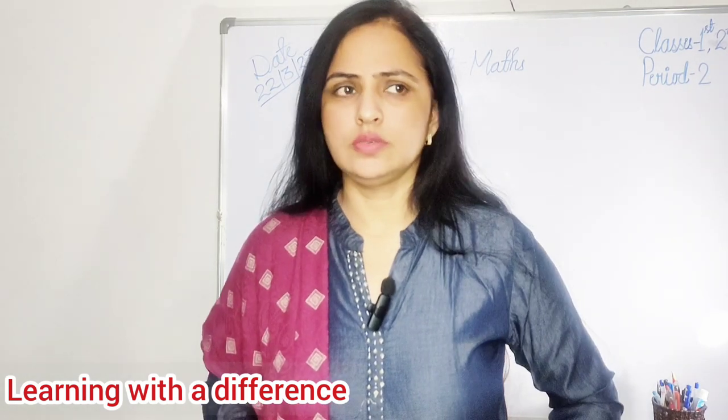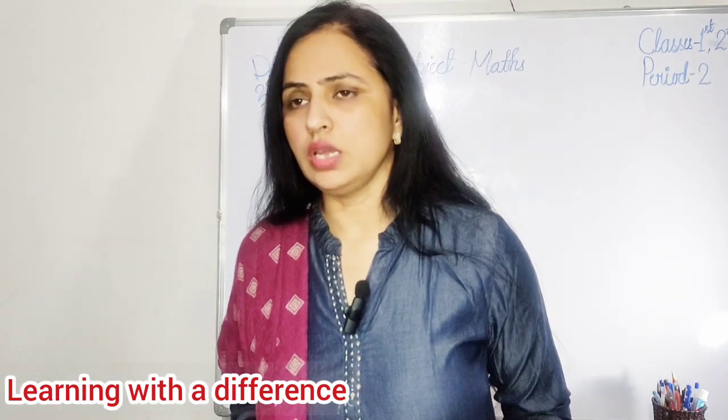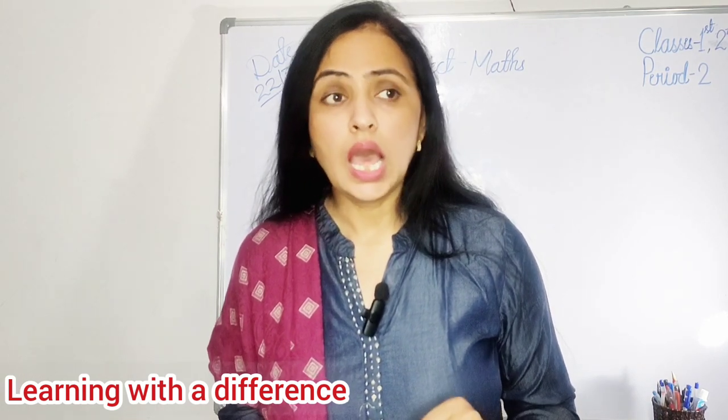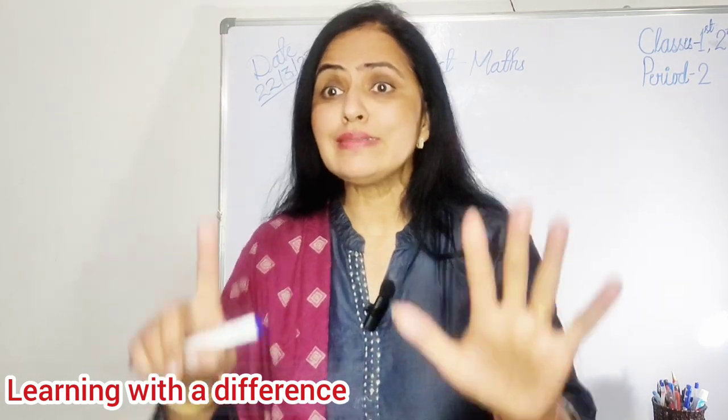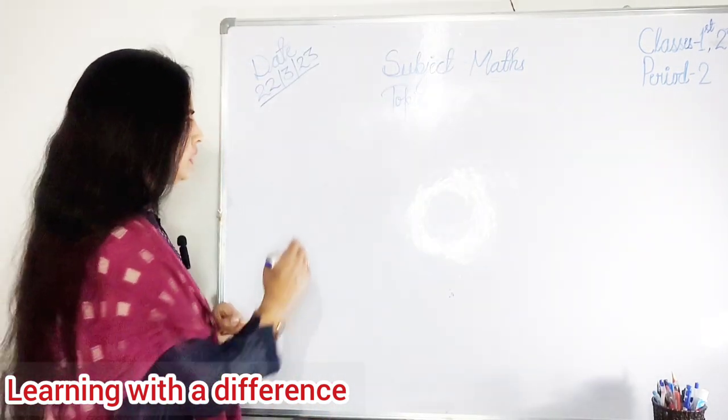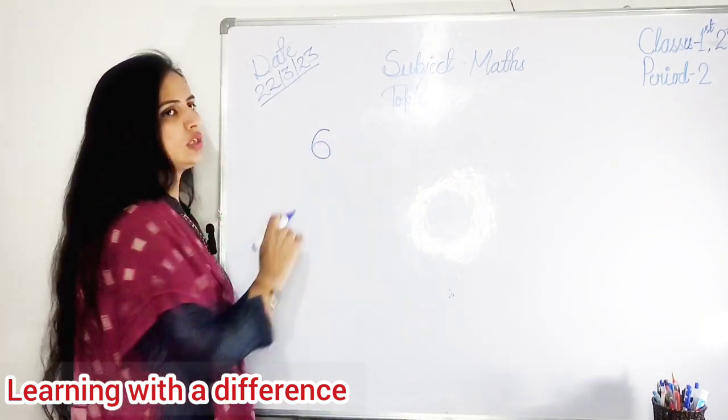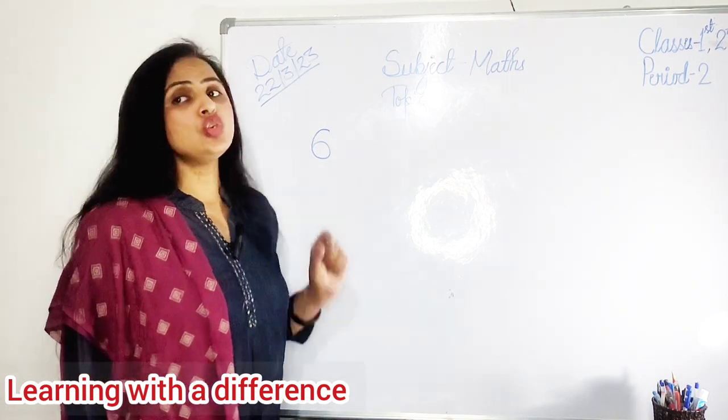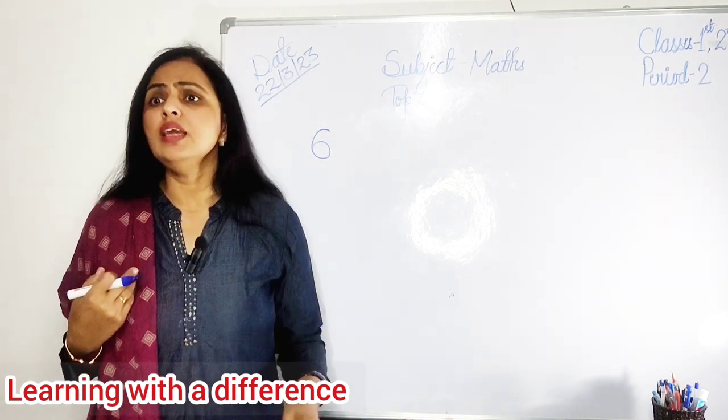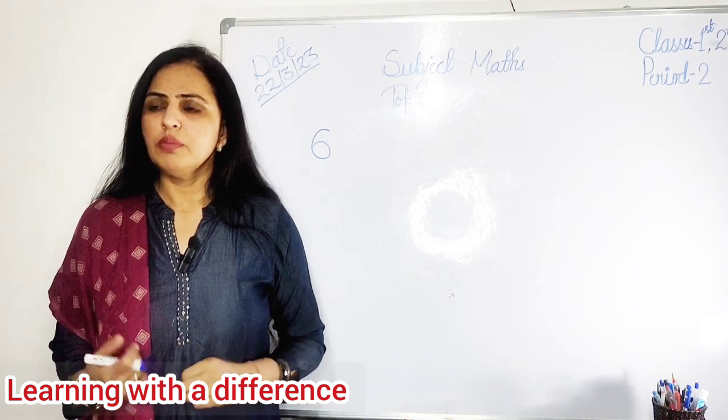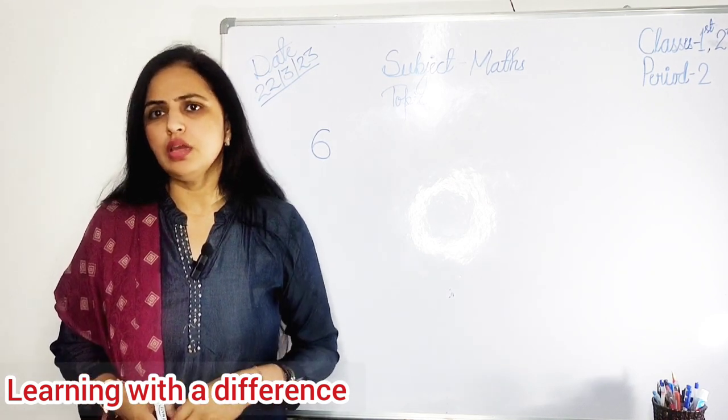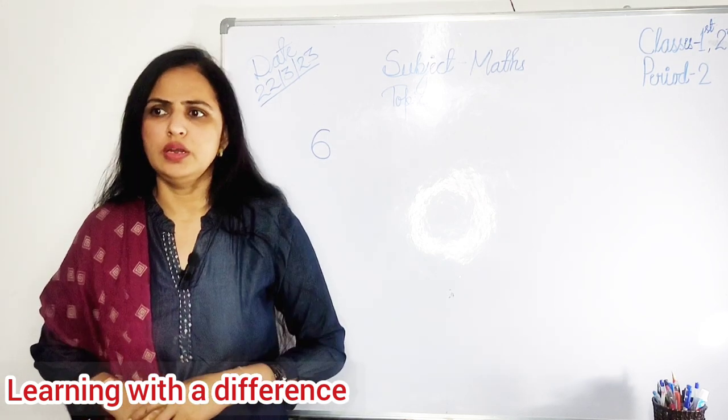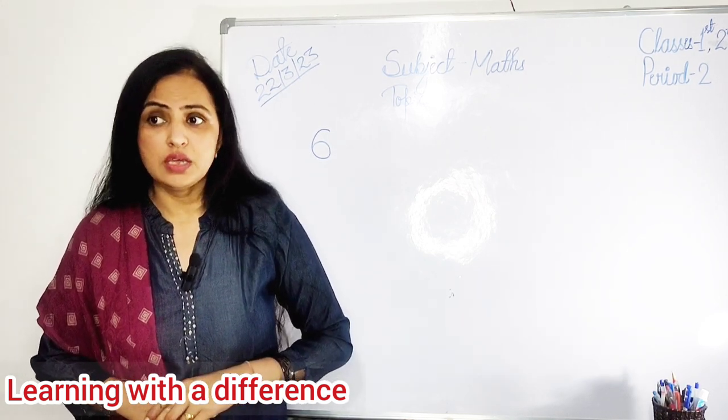But pata hai kya hua? Ma'am felt very hungry. Ma'am ko mujhe ke bahut bhookh lagi. But I purchased six chocolates. Ma'am ne kya kiya - six chocolates maine purchase kiya. Ab problem kya thi? Six chocolates, ham lene wale three people. Ma'am confused hogayi ki kaise divide karenge equally, taaki hume fighting bhi na ho aur hume equally share kare.